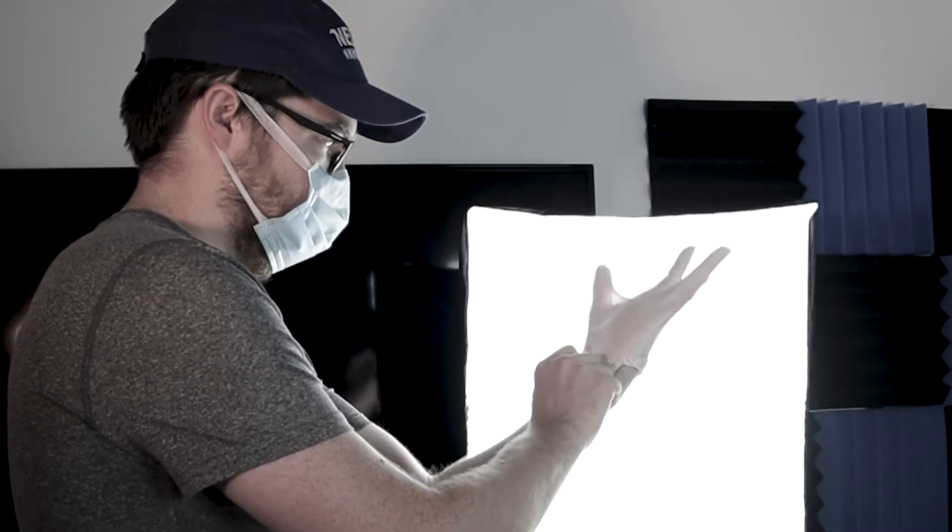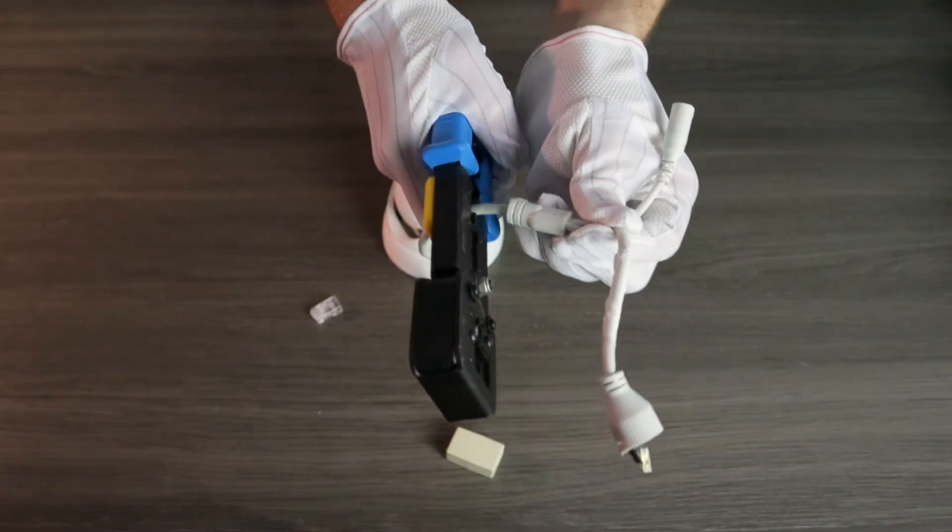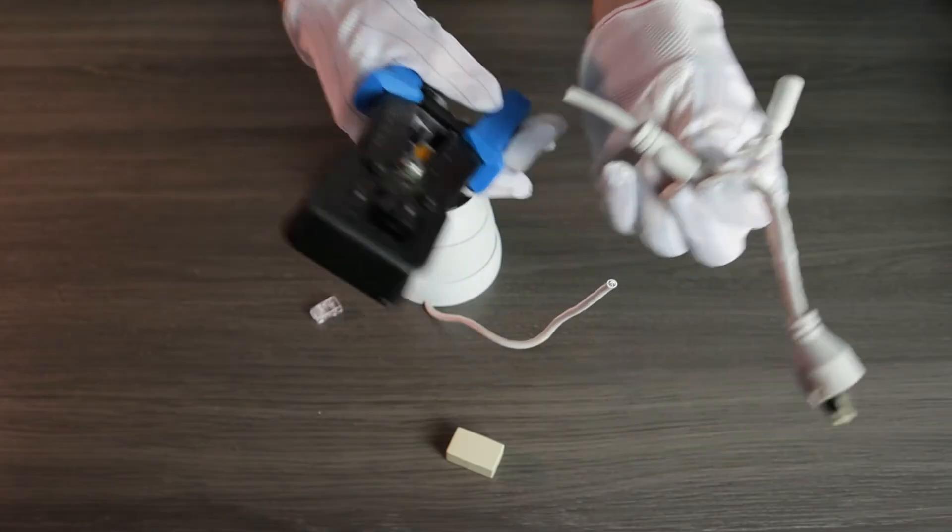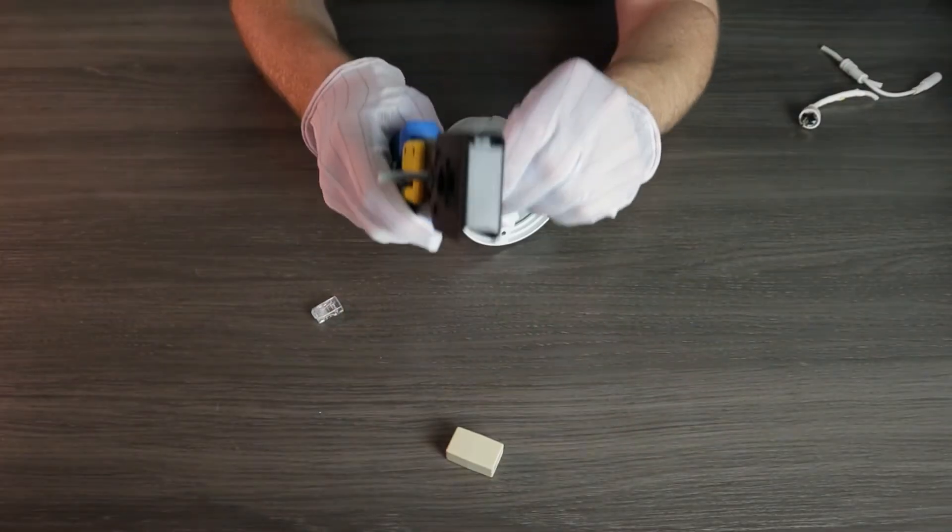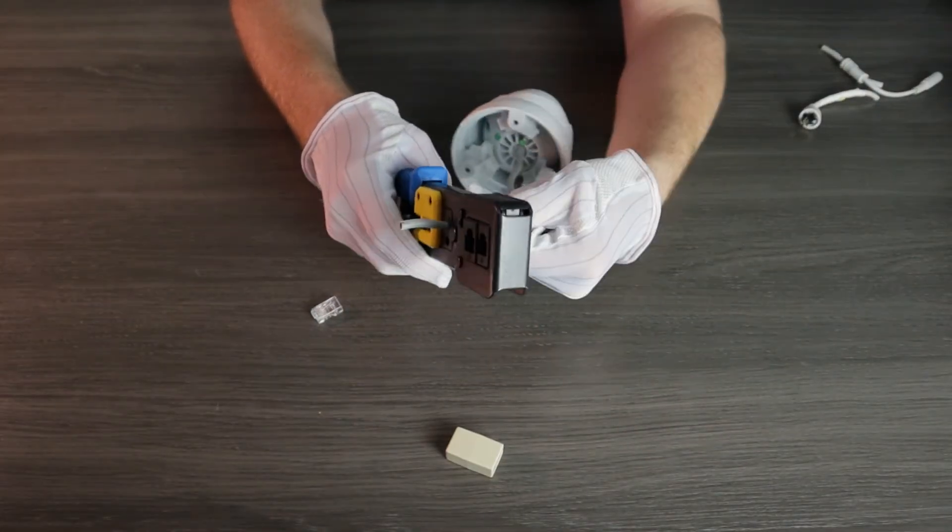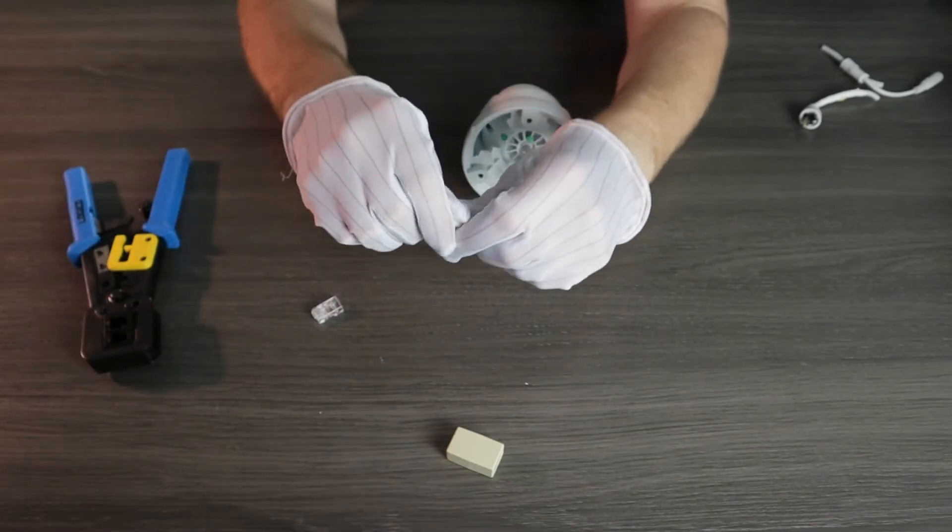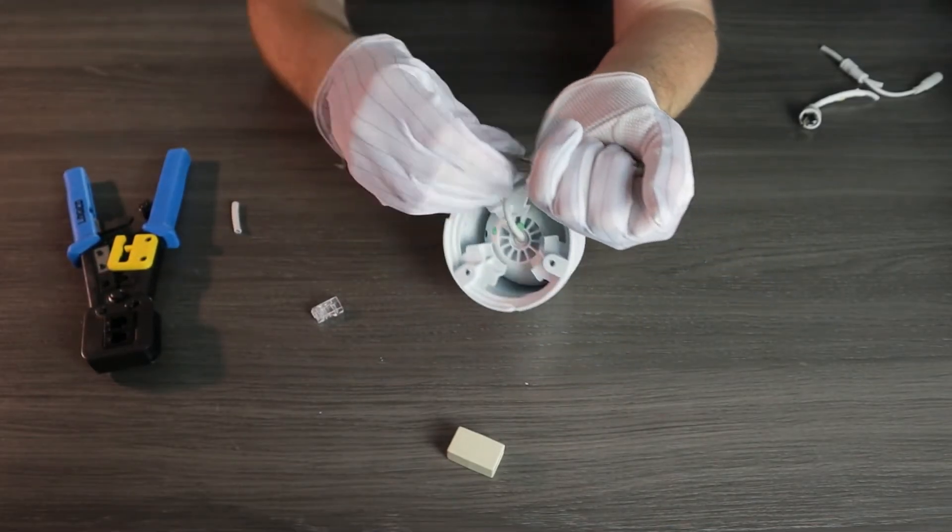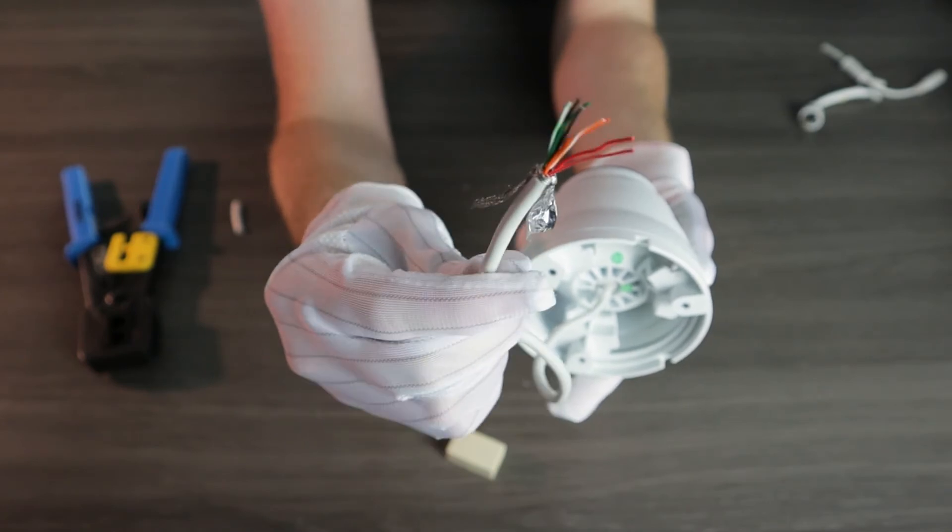First step, we gotta amputate. Take your crimping tool and cut off the damaged connector. Go ahead and strip the cable jacket back just a bit. And you may find some insulation in there. You can just pull that back to reveal the colored wires inside and cut it off if you need to so it won't be in the way.